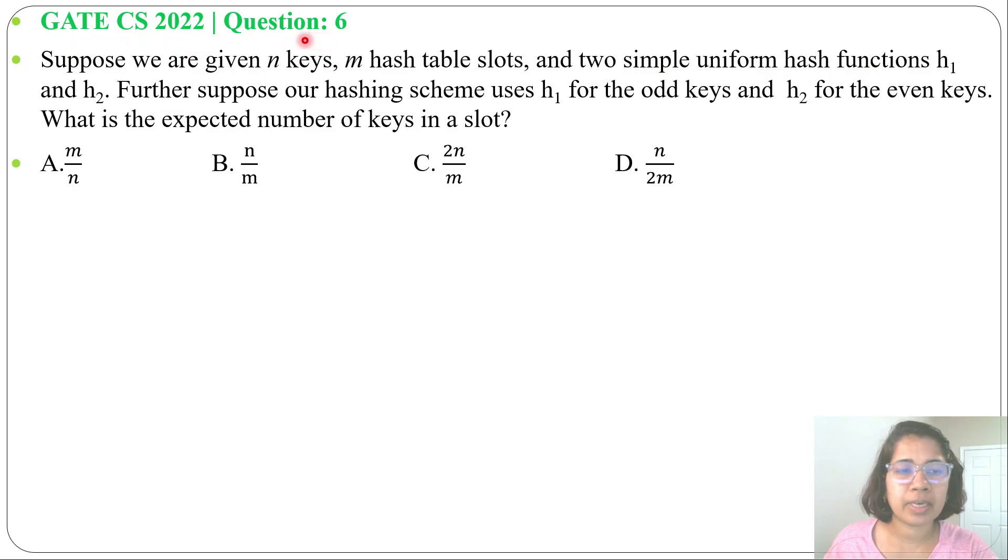Let's solve a previous hashing question from GATE CS 2022, question number six. Suppose we are given n keys, m hash table slots, and two simple uniform hash functions h1